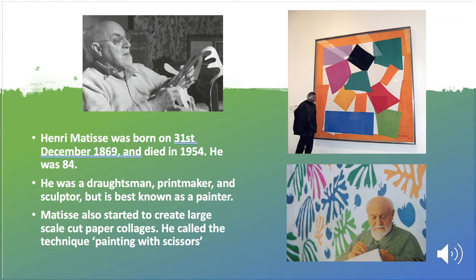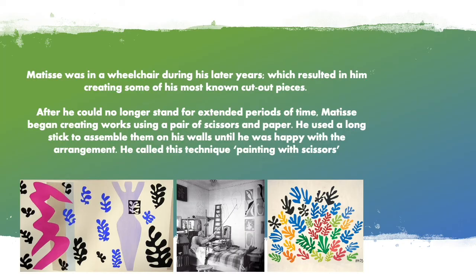So who is Henri Matisse? He was born on the 31st of December 1869. He worked in many different ways — he was a printmaker, a sculptor — but he was best known as a painter. Matisse also started to create large-scale paper collages, and he called this technique 'painting with scissors,' which is what we'll be looking at in today's lesson.